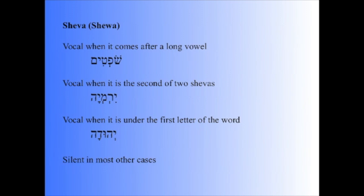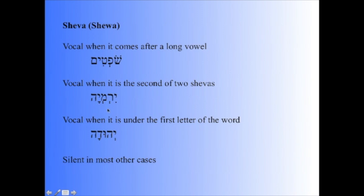We mentioned that the Shva can either be vocal or silent. It is usually vocal when it comes after a long vowel — so you'll notice here you have the Cholem, which is a long vowel, so this would be 'Shofetim,' and the Shva is pronounced. Where you have two Shvas in a word, the second one is vocal, so this would be 'Yirmeyah' — notice that throwaway vowel is pronounced. And it is vocal when it is under the first letter of the word, 'Yehudah.' In most other cases, the Shva is silent.